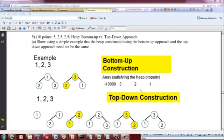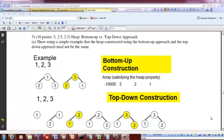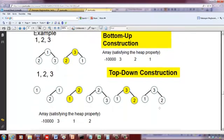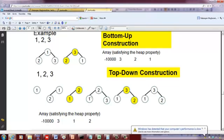So now let's do a top-down construction of this heap. So this is going to be again 1, 2, 3. You start with 1 and then you put 2 as the left child. That is not satisfying the heap property, so you move 2, 1, and then you insert 3. It doesn't satisfy the heap property, so you move 3 up and bring 2 down.